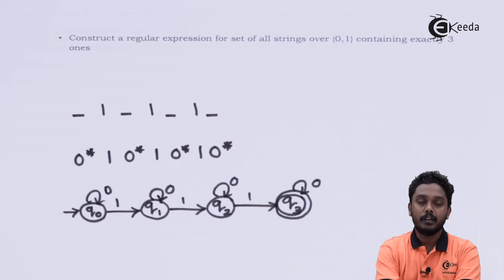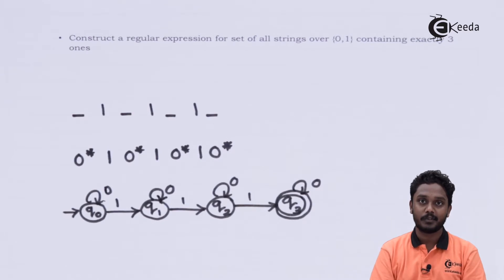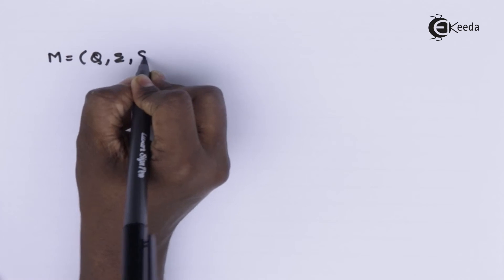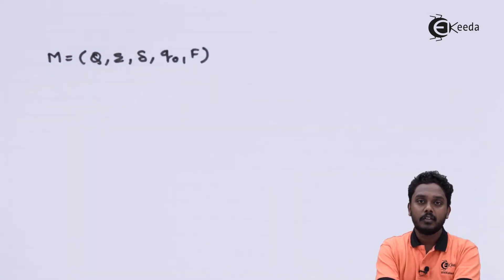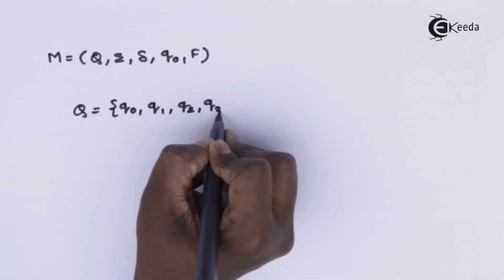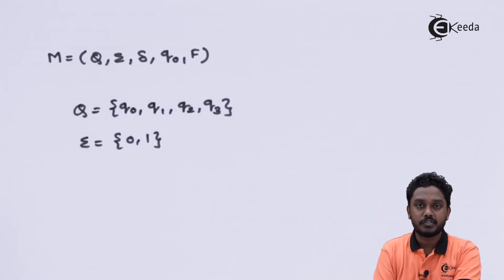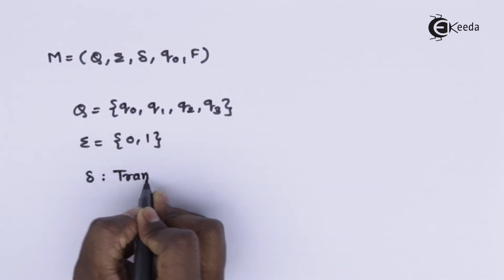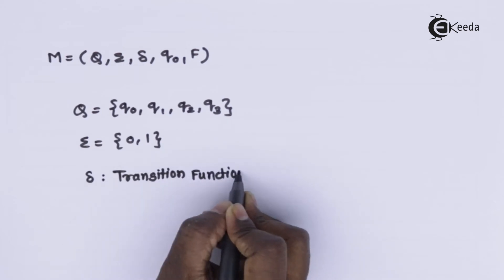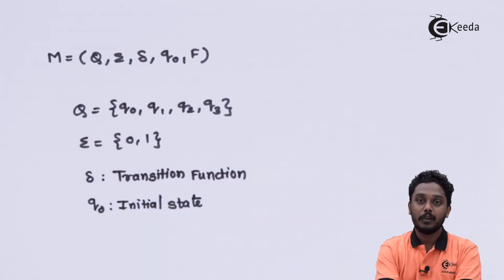Now let us construct the NFA. It contains states q0, q1, q2, and q3. States q0, q1, and q2 are non-final; q3 is the final state. The NFA M is given by Q, sigma, delta, q0, and F. Q contains q0, q1, q2, and q3. The alphabet sigma contains 0 and 1. Delta is the transition function, q0 is the initial state, and the set of final states F contains only q3.